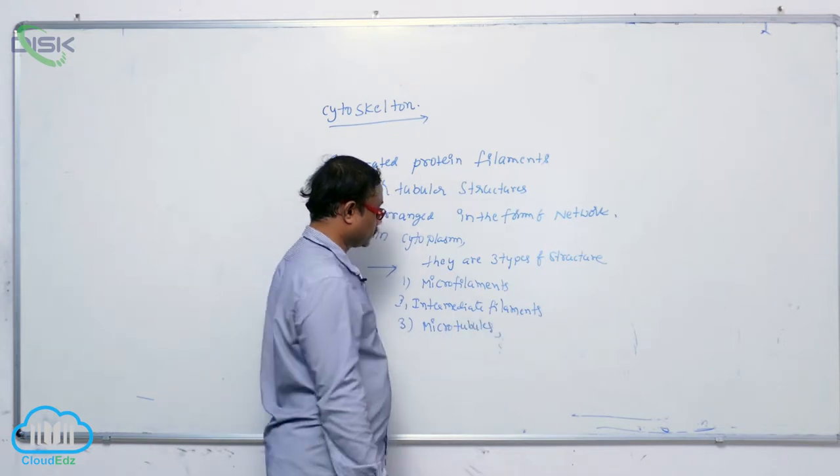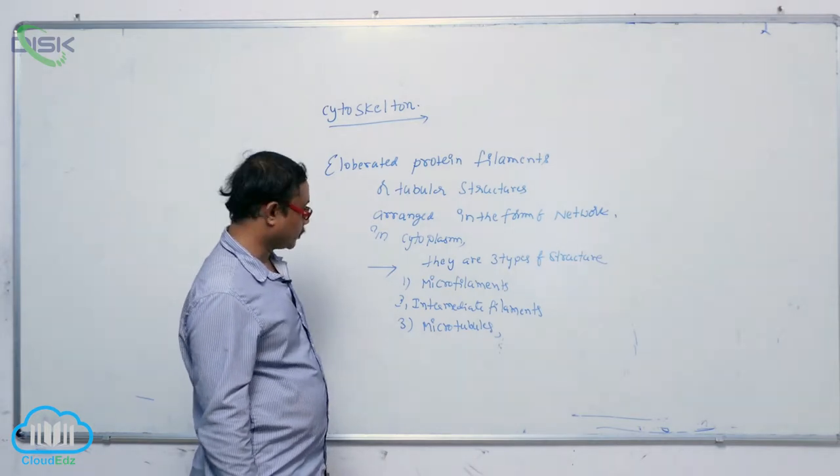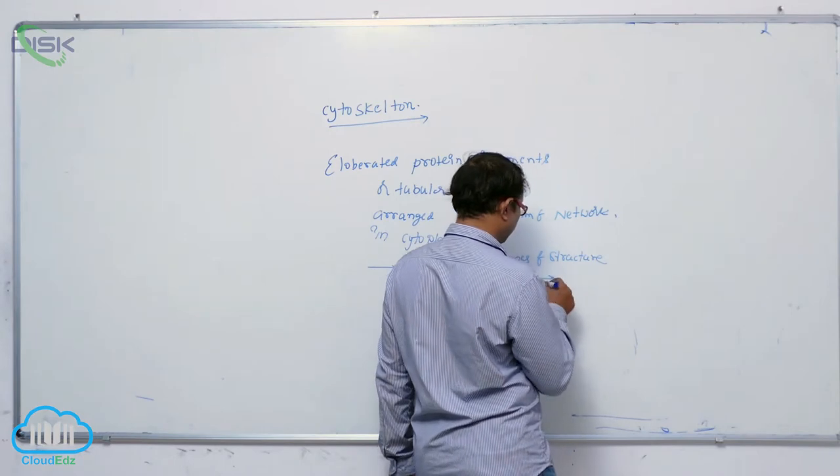Generally there are three types of structures: microfilaments, intermediate filaments, and microtubules. They are performing different functions.